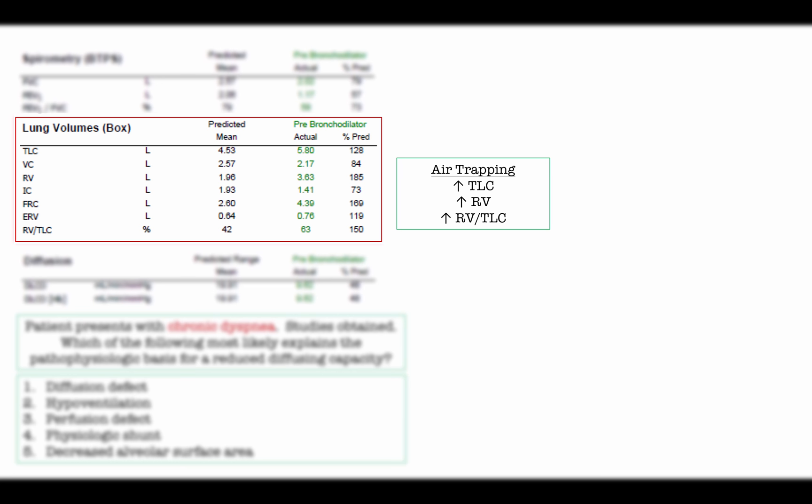Next, we turn to lung volumes determined by body plethysmography. With lung volumes, I look for total lung capacity and residual volume. The total lung capacity is elevated to 128% of predicted, while the residual volume is 185% of predicted — almost twice the expected value. The increase in total lung capacity in obstructive disease is largely due to an increase in residual volume. I refer to this elevation as air trapping, because that is exactly what is going on physiologically.